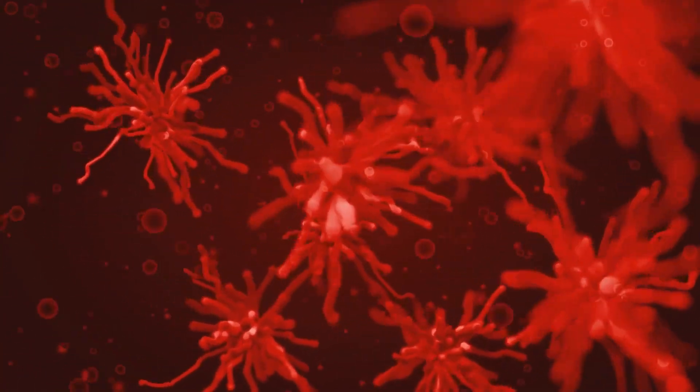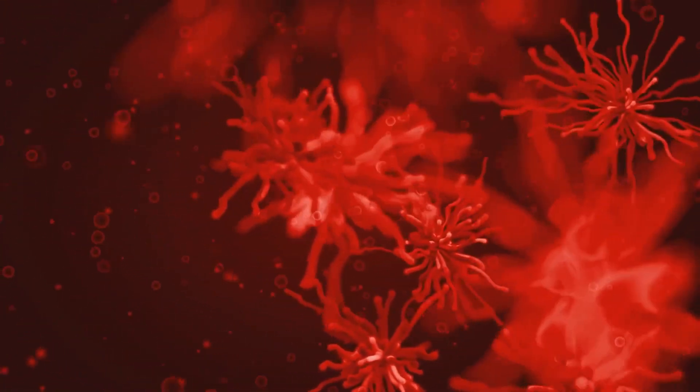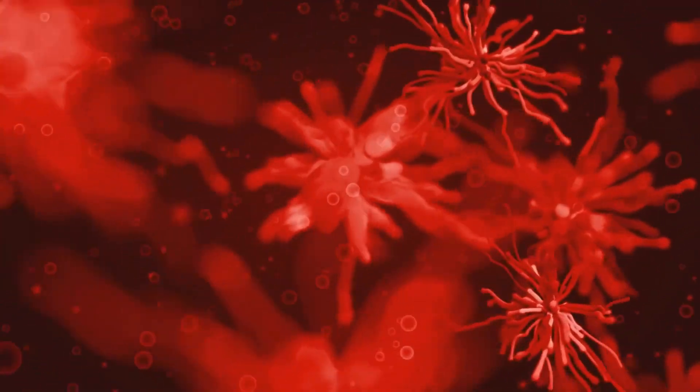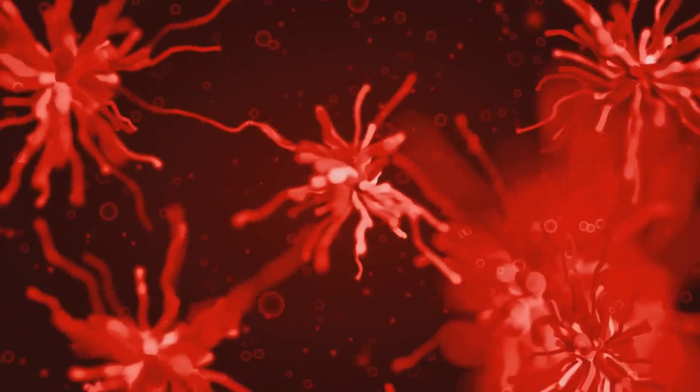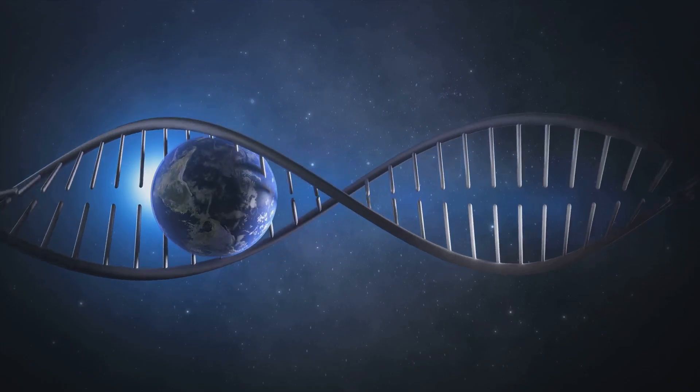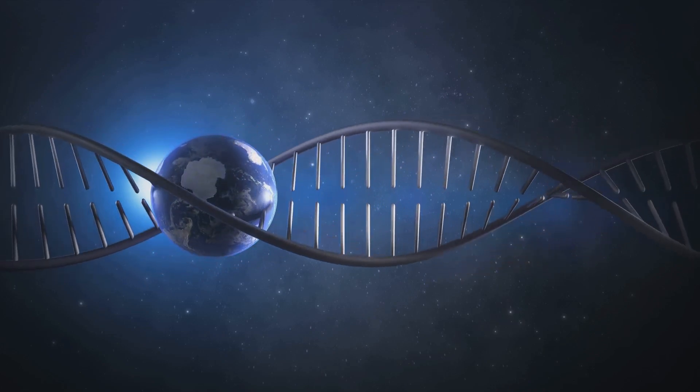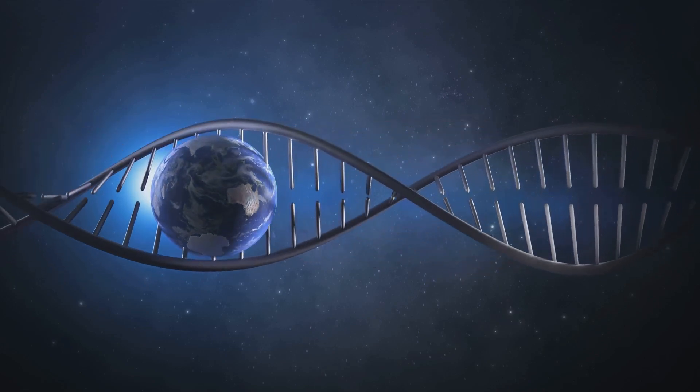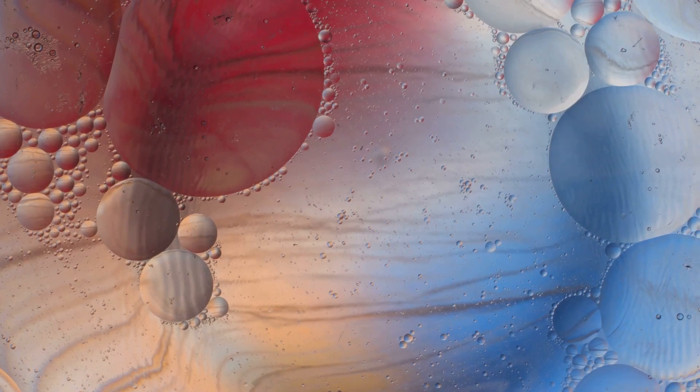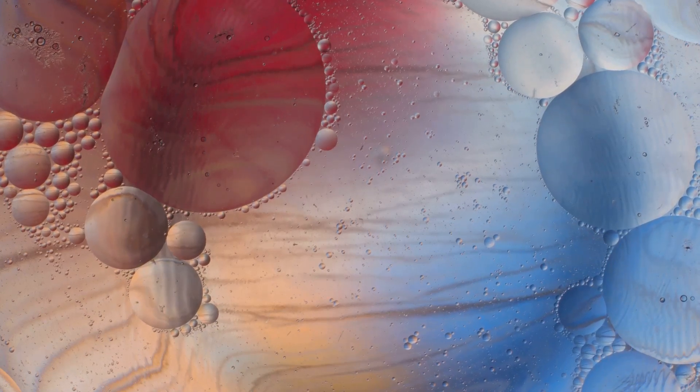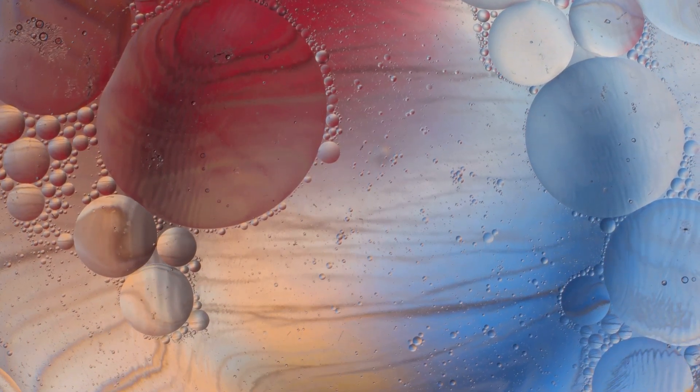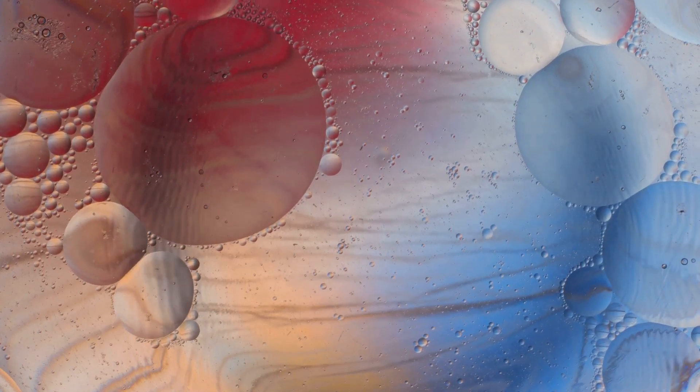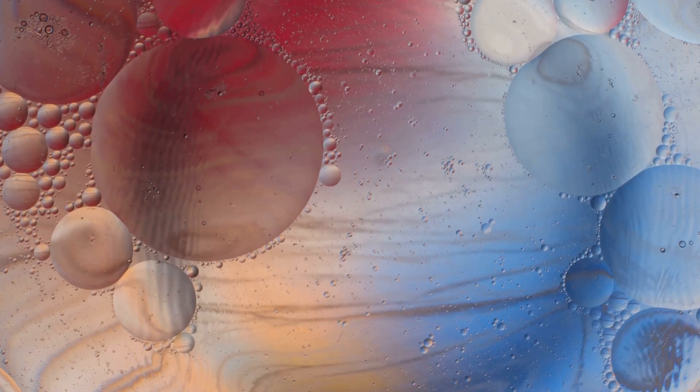From the simple single-celled organisms of the primordial soup to the diverse and complex life forms that populate our planet today, life on Earth is a testament to the universe's incredible capacity for creation. It's a story of cosmic proportions, a story of how the most ordinary of elements under the right conditions can create something as extraordinary as life. Thus, against all odds, the stage was set for the emergence of life.